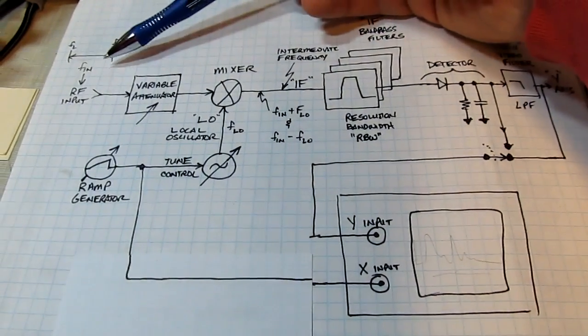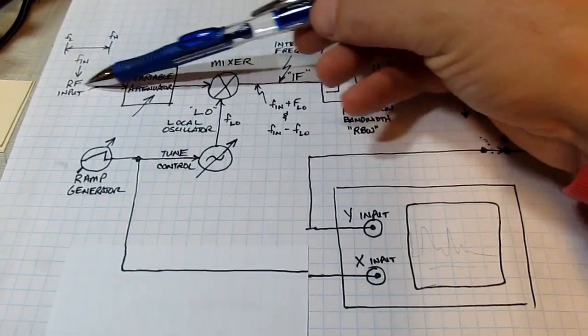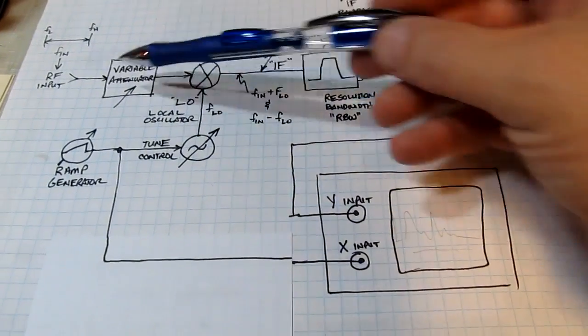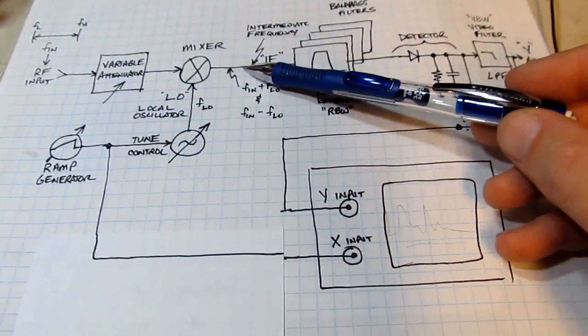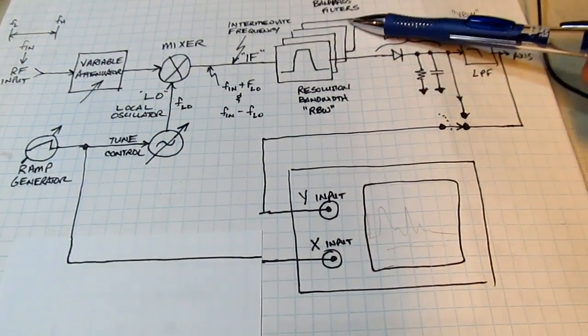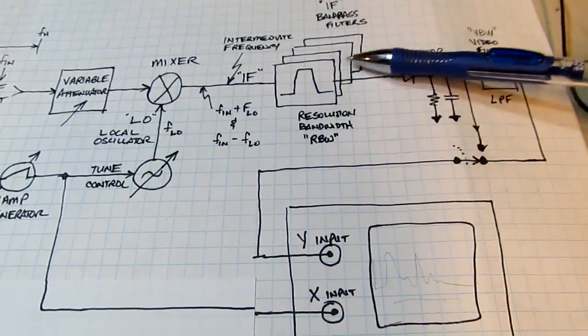Really what a spectrum analyzer is is a swept tuned receiver and we've got RF signal coming in. We're sweeping a local oscillator into a mixer which effectively puts a range of frequencies and slides them through what's called the IF and the IF filters. In this case these are actually the resolution bandwidth filters and we'll talk about what that means.